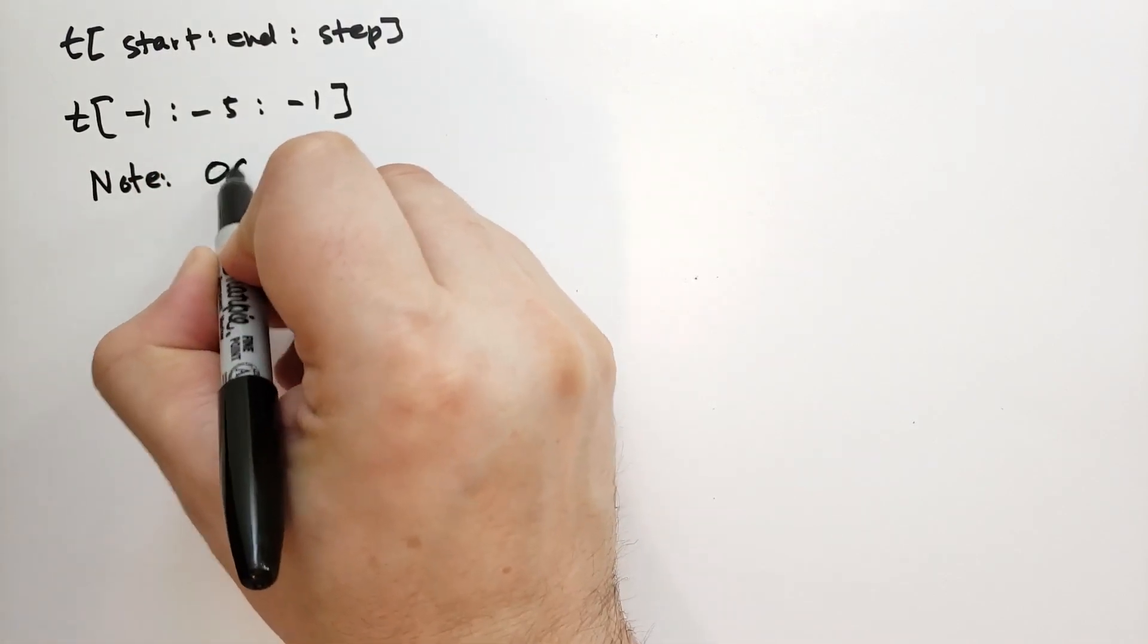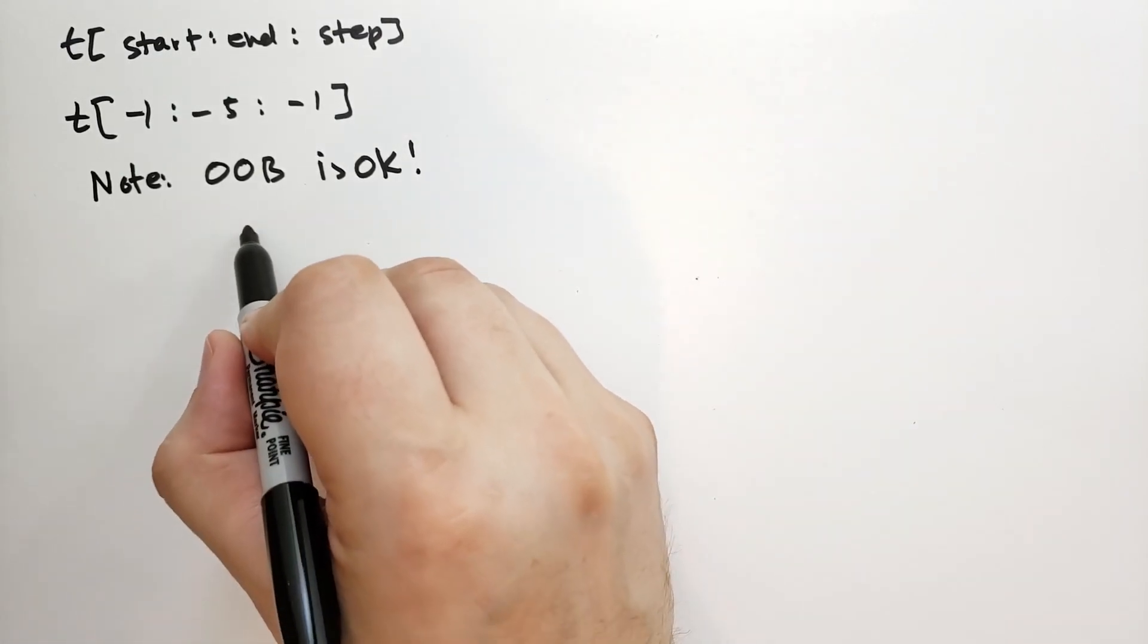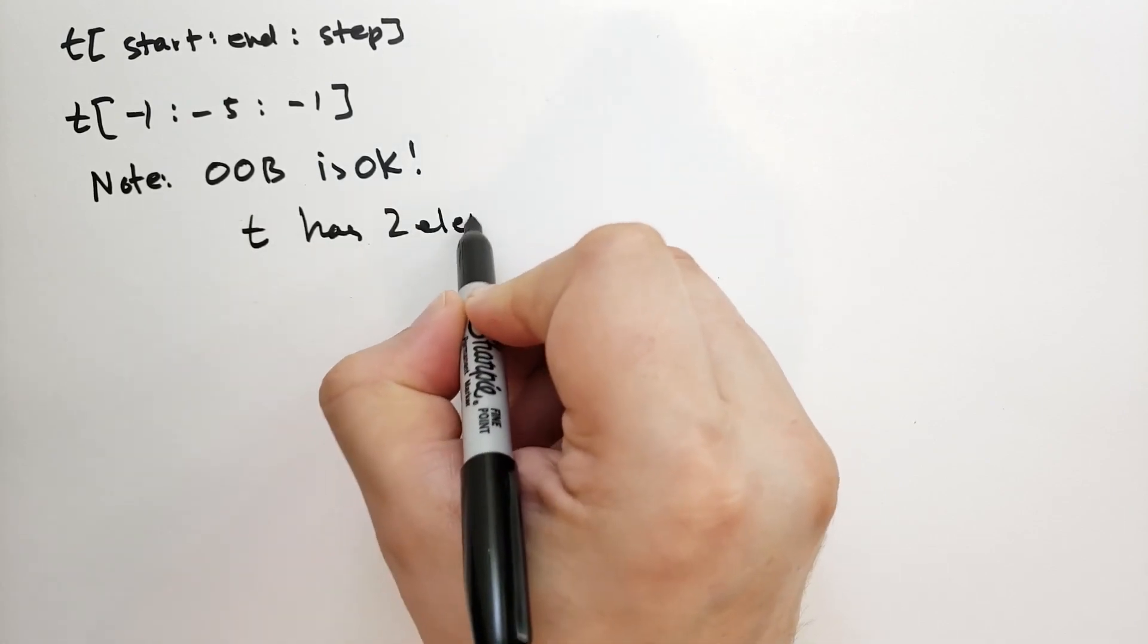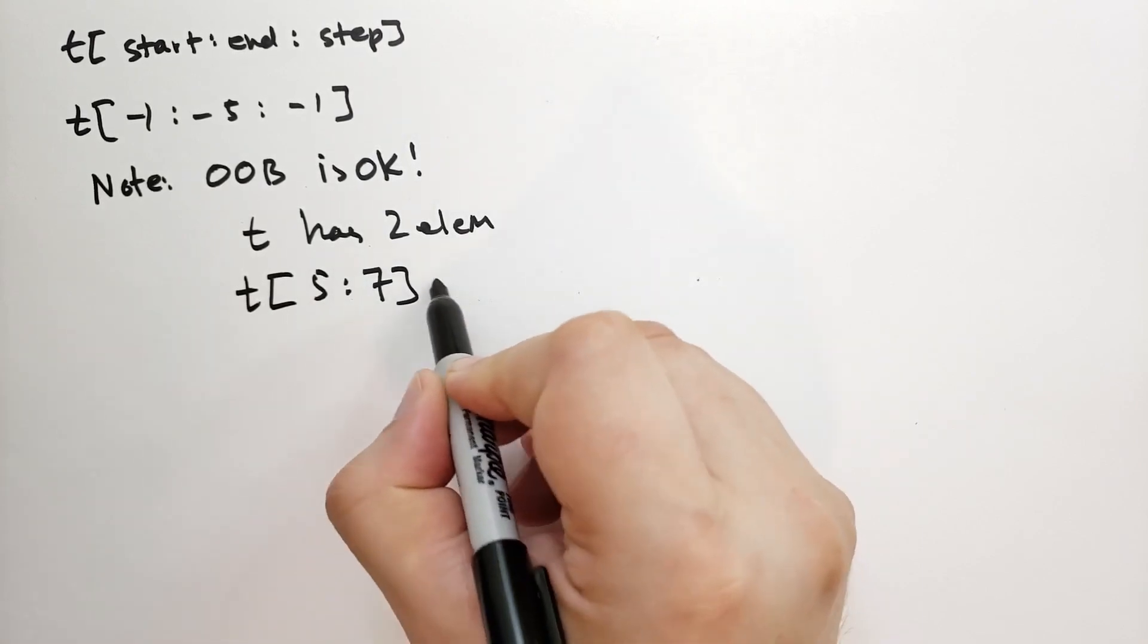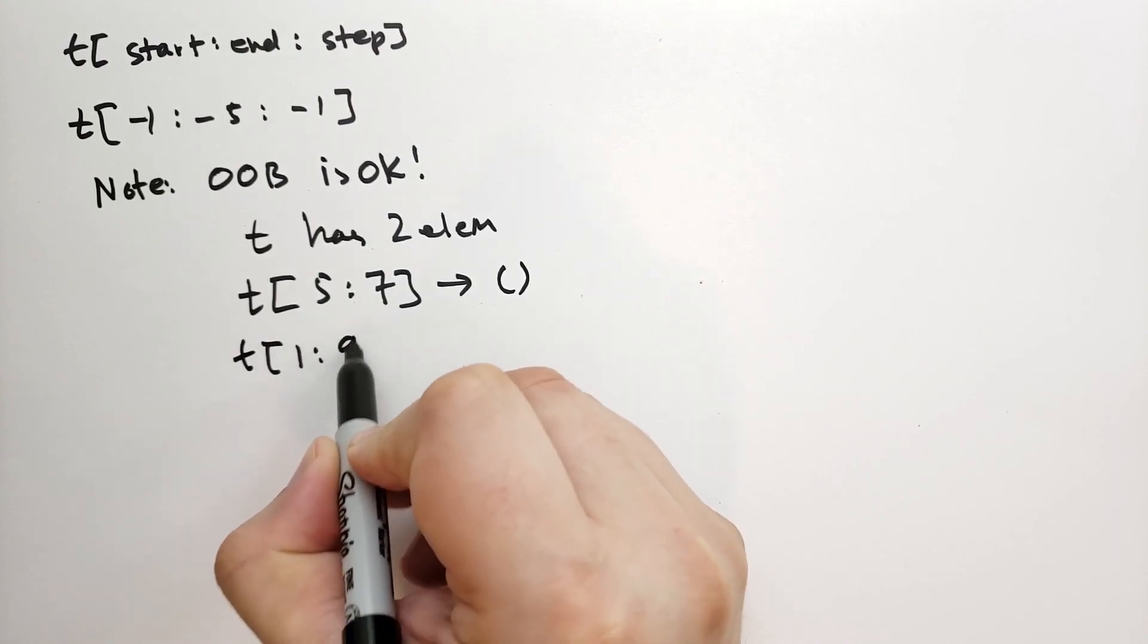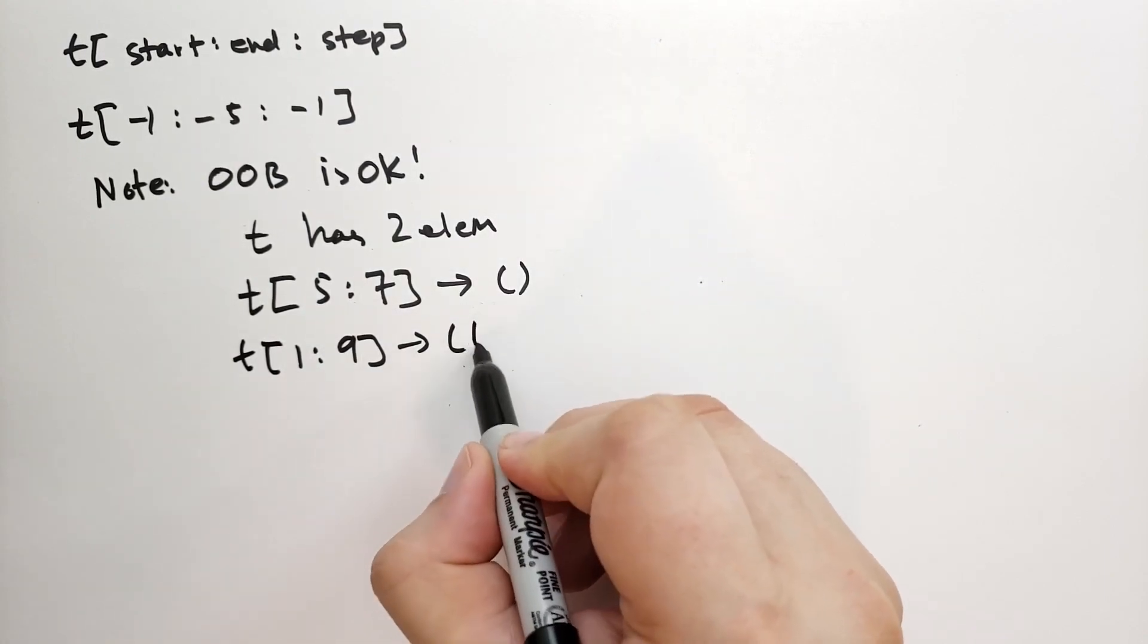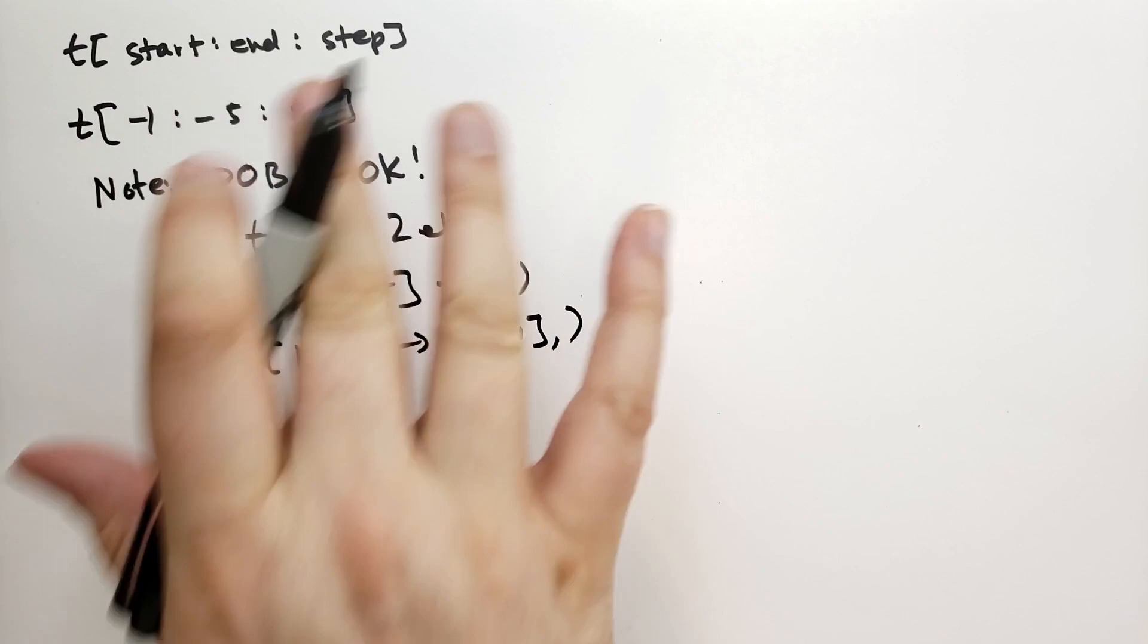Note, out of bounds is okay. So if we were to take, let's say t has two elements. So only t0 and t1 make any sense. And in that case, t of 5 to 7 will give you the empty tuple. So when you go out of bounds, it doesn't raise an error or an exception. It just doesn't return anything. So you can say, for instance, t from 1 to 9. And what that will give you is it just gives you the first element, t of 1. And then that's it. It's pretty interesting. You should play around with this to get familiar with this syntax and understand how it works. Slicing is a very powerful concept in Python.